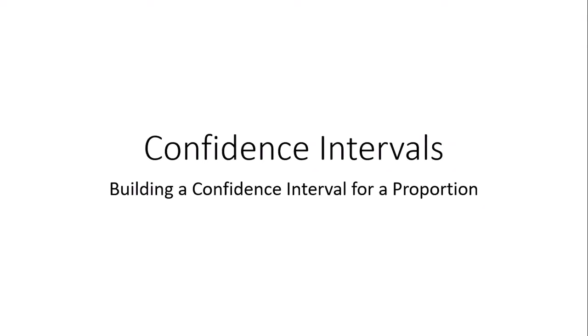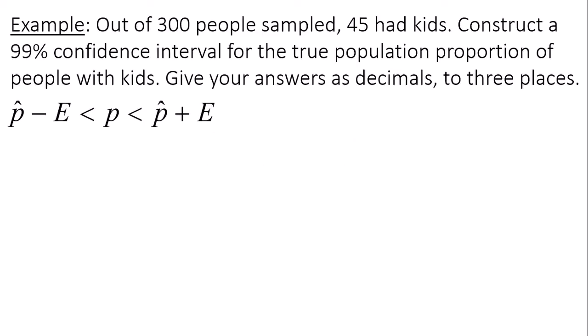Hi, we're going to do an example on how to build a confidence interval for a population proportion. Out of 300 people sampled, 45 had kids. Construct a 99% confidence interval for the true population proportion of people with kids. Give your answers as decimals to three places.